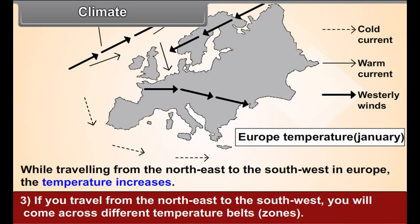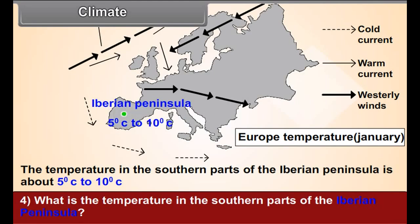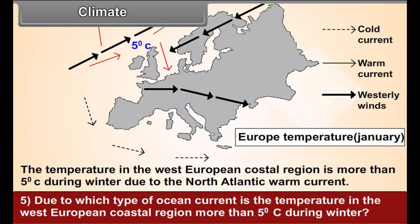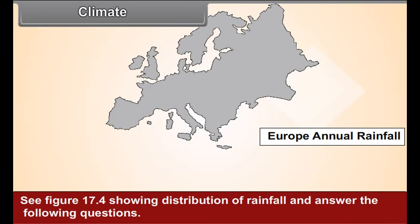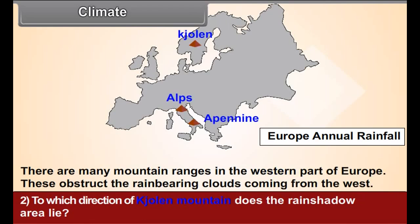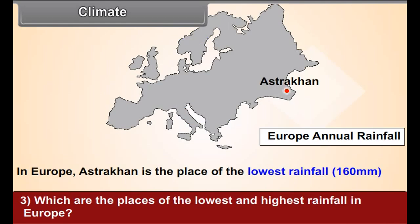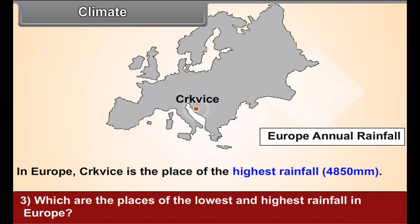If you travel from the northeast to the southwest, you will come across different temperature belts — what conclusions will you draw from them? What is the temperature in the southern parts of the Iberian Peninsula? Due to which type of ocean current is the temperature in the west European coastal region more than 5 degrees Celsius during winter? See figure 17.4 showing distribution of rainfall: 1. In which direction does the rainfall in Europe decrease and why? 2. To which direction of Jorlin mountain does the rain shadow area lie? 3. Which are the places of the lowest and highest rainfall in Europe?